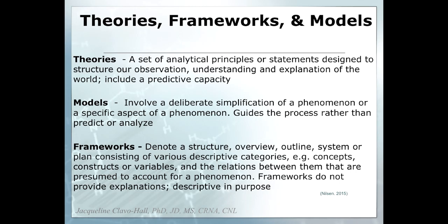Once a model has been tested a sufficient number of times and acts in a predictable fashion each time, you can start to generate a theory as to why those things are happening. A theory is essentially a predictive model at its base, and it's something that happens in each instance we've tested it, but we haven't proven it to be absolutely true. Once we prove it absolutely true, it becomes a scientific law.